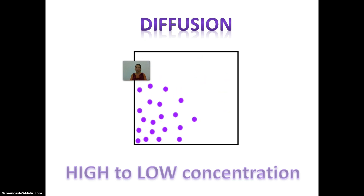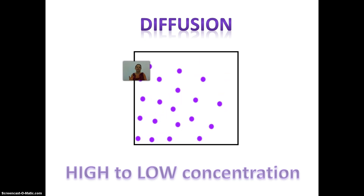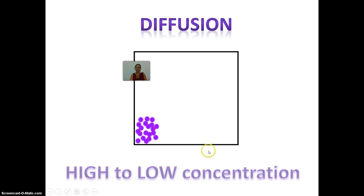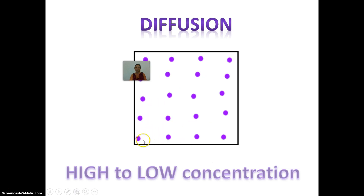Here's an example of diffusion: if you spray air freshener, the molecules right outside the can are at a very high concentration and spread out across the room until they reach equilibrium. That's why people close by smell it first — it has to diffuse all the way through the rest of the room. Again, traveling from a high to a low concentration, this does not require energy.